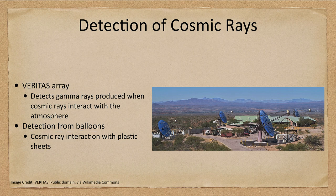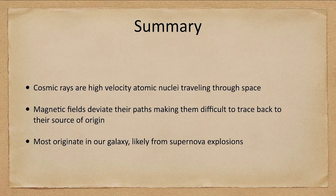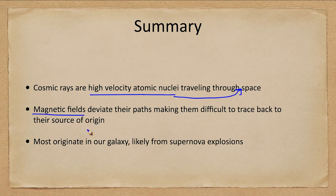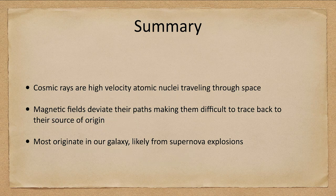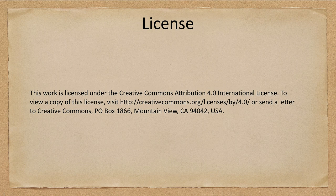In summary, cosmic rays are high velocity atomic nuclei traveling through space. Magnetic fields deviate their paths, meaning we cannot find their direct source of origin, but we believe most come from supernova explosions within our galaxy. That concludes this lecture on cosmic rays. We'll be back next time for another topic in astronomy — have a great day everyone, and I will see you in class.